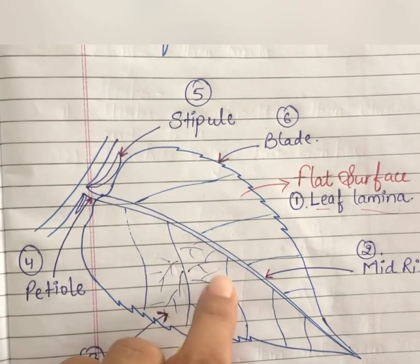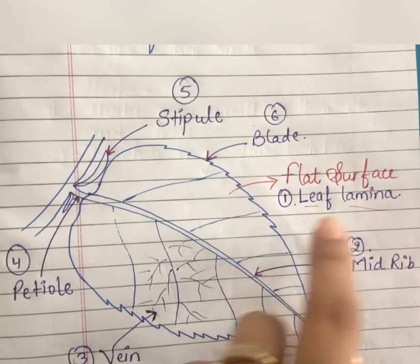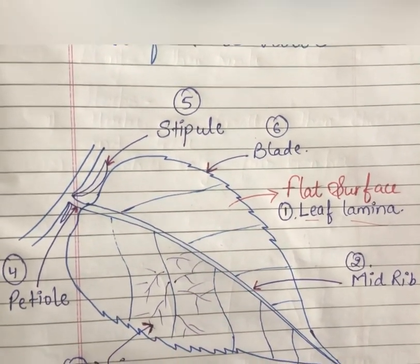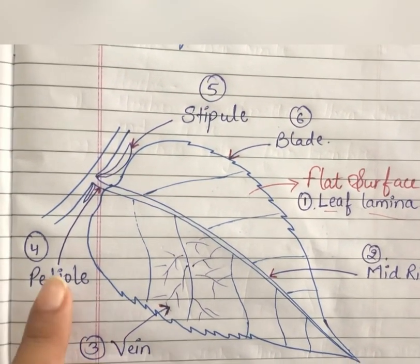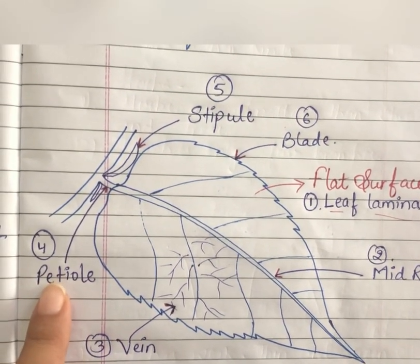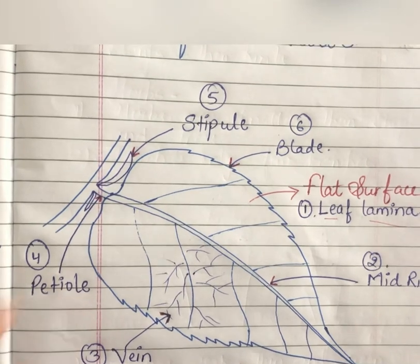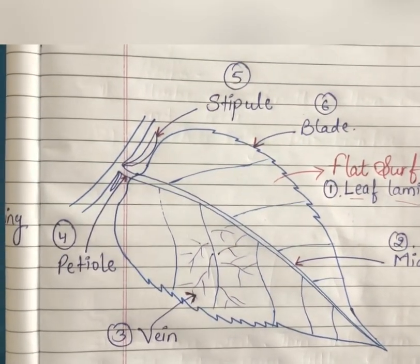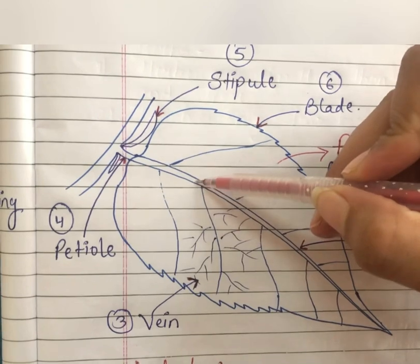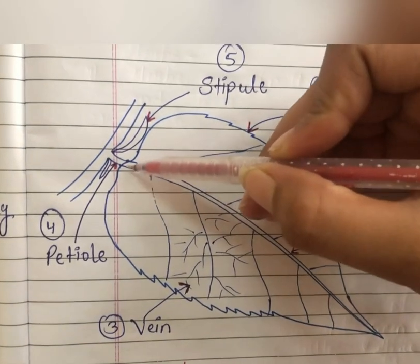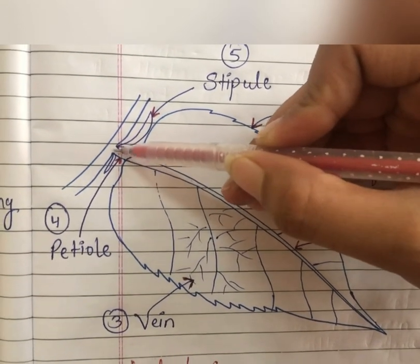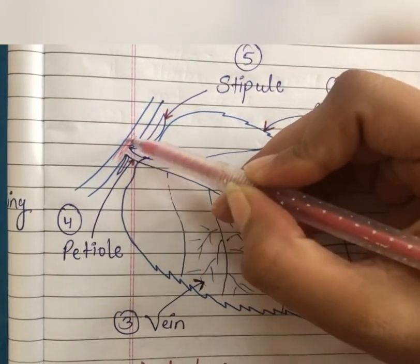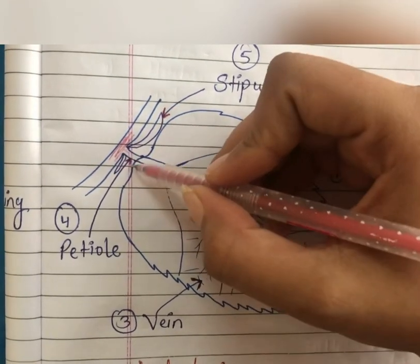The third part is these small veins which pass through the leaf surface, across the entire lamina. The next one is the petiole. The petiole is basically the midrib which extends and attaches to the stem.